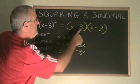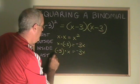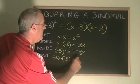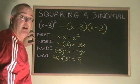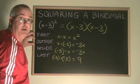The last terms are the negative 3 and the negative 3. Negative 3 times negative 3 is equal to positive 9. Now we just have to combine these four terms into a polynomial expression and simplify.